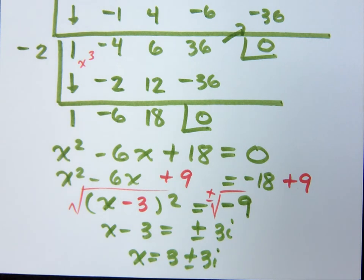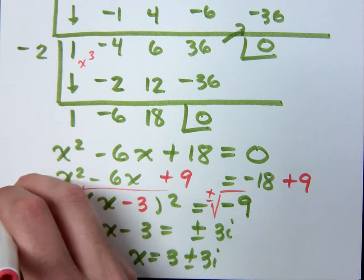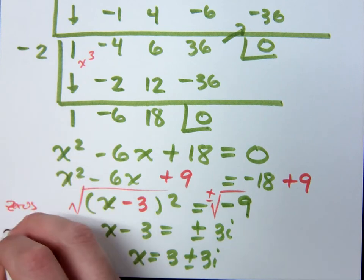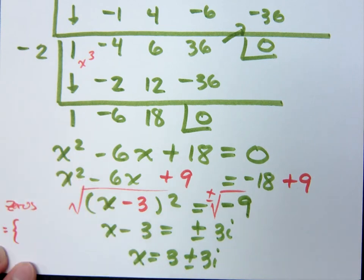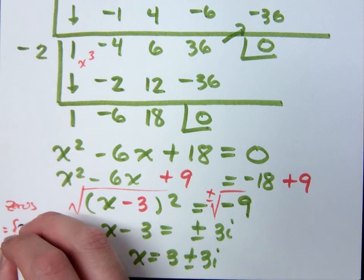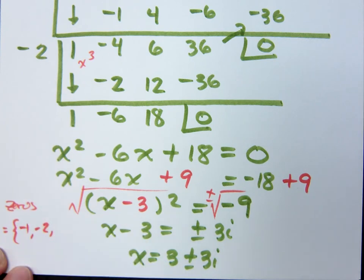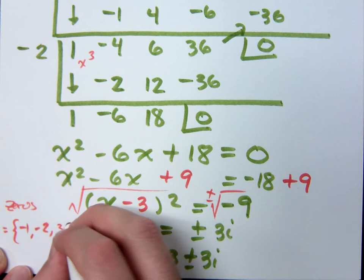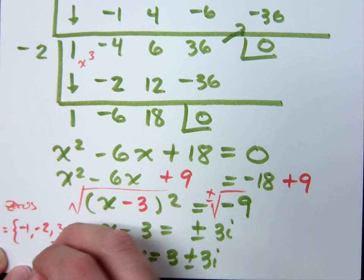Notice how those complex numbers are complex conjugates, right? Yeah. So what were your zeros? Negative 1, 0. Negative 2, 0. And then the complex. Well, your zeros were negative 1, negative 2, 3 plus 3i, 3 minus 3i, right?